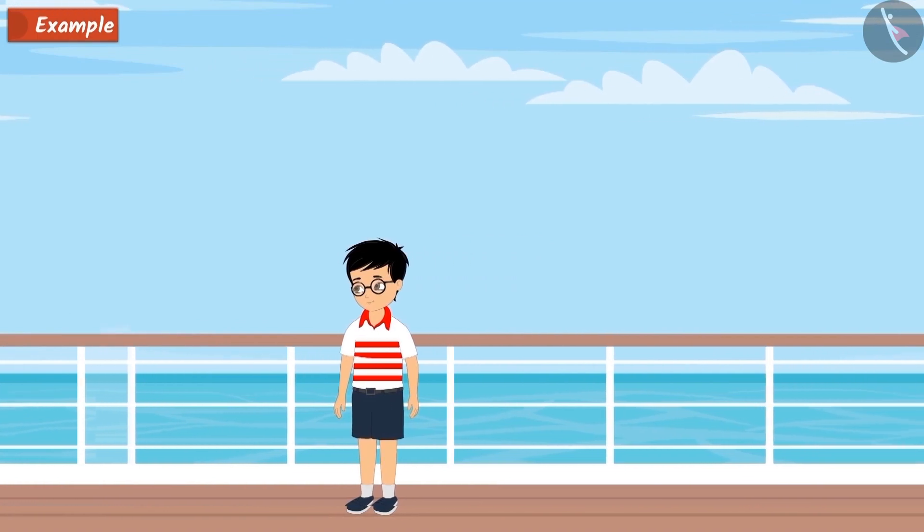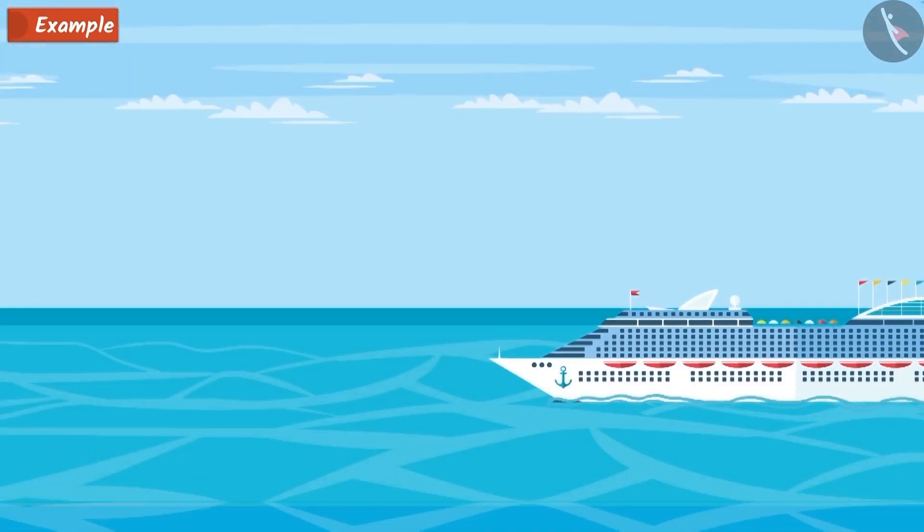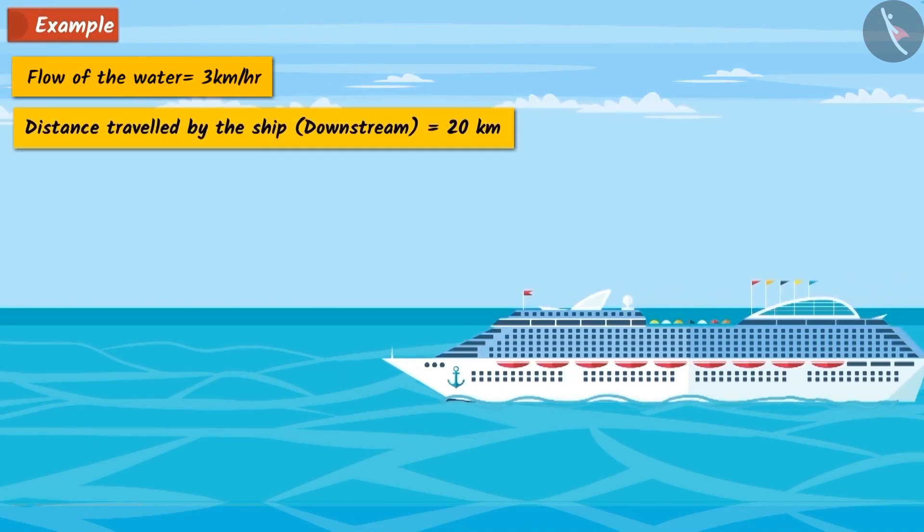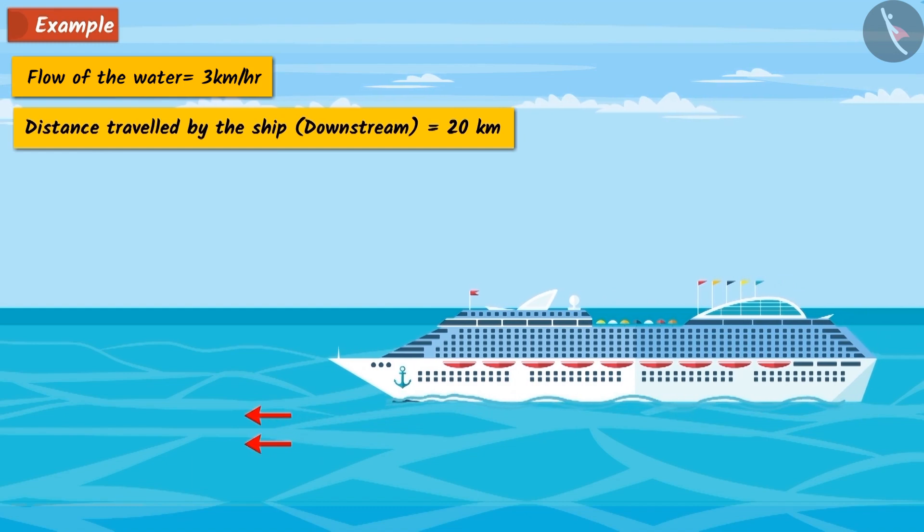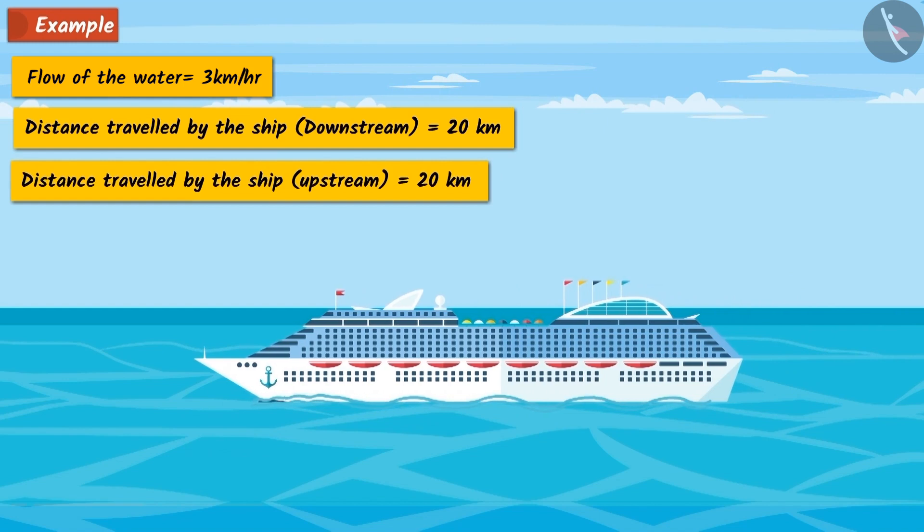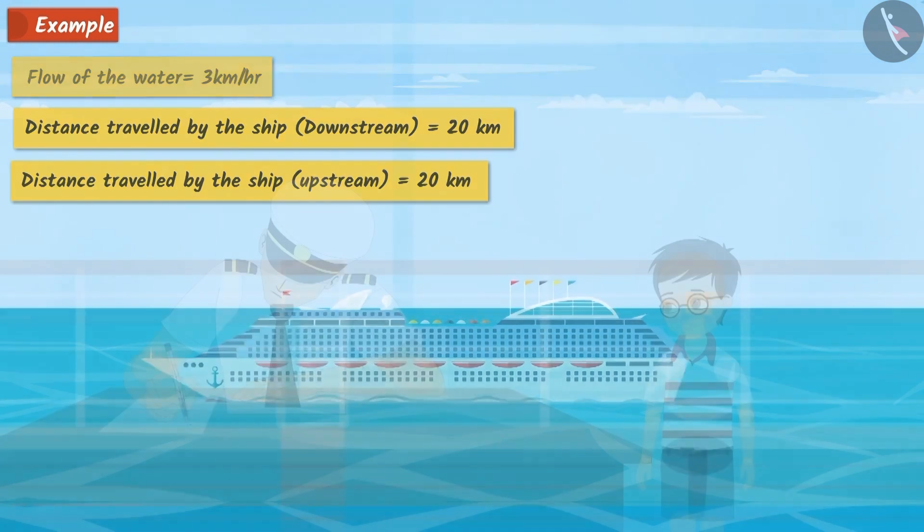Tarun spent 4 hours on a ship where the water flow was 3 km per hour and the ship ran 20 km downstream and 20 km upstream. When he came back, he sees the captain writing some math equation on paper.